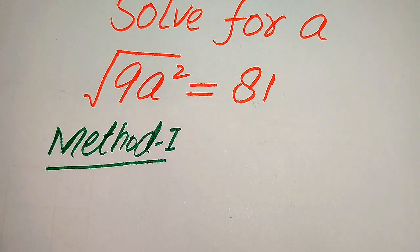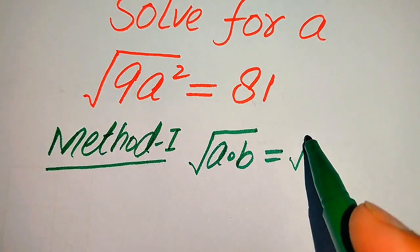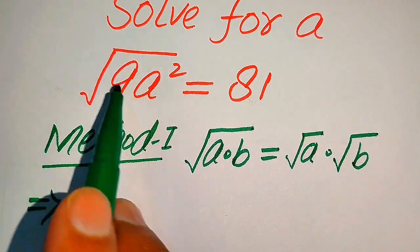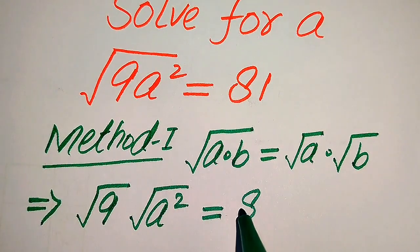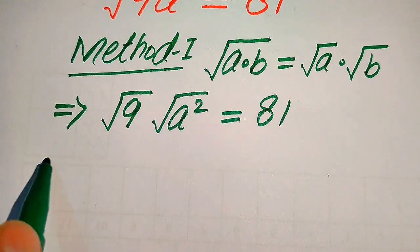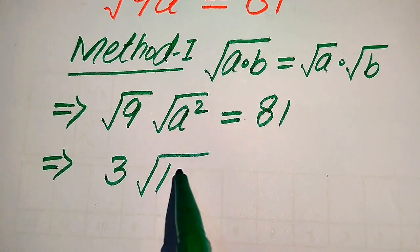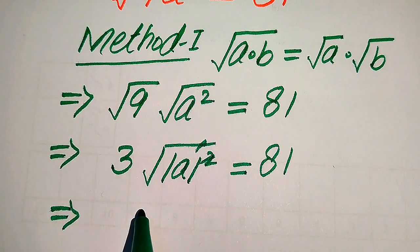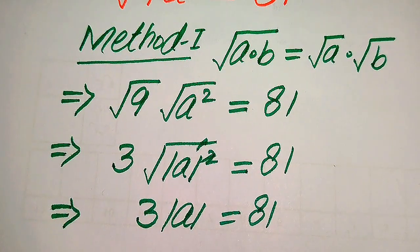Now we move towards the first method. In the first method we use the square root product rule — you know that if we have a square root of a·b, we write it as square root of a multiplied by square root of b. In the same pattern, we break the square root of these terms and write it as square root of 9 into square root of a squared equals to 81. Here we know that the square root of 9 becomes 3, and we write a squared as |a| squared, which simplifies so that 3 times |a| equals to 81.